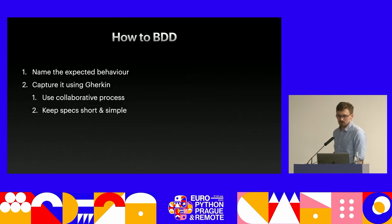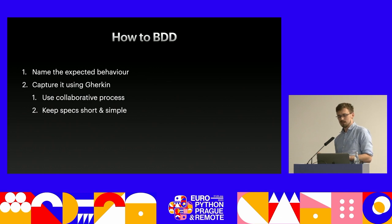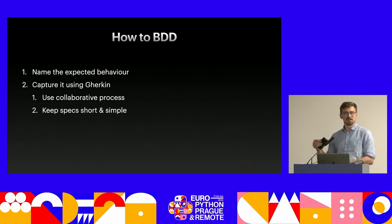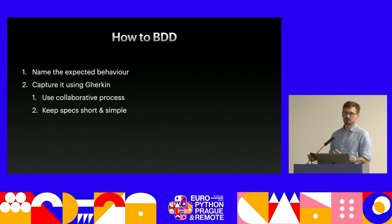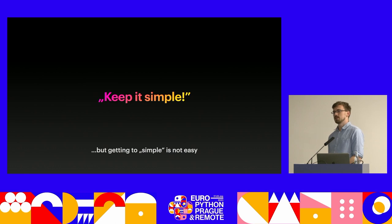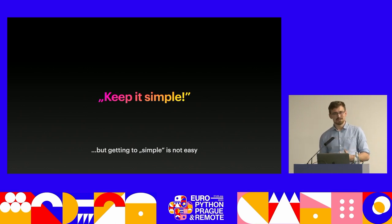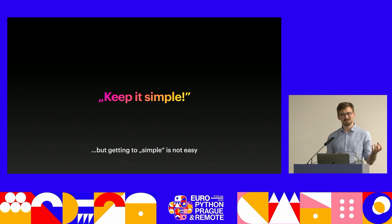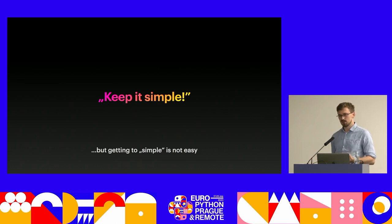This puts the second point on our list: once we know the expected behavior, capture it using Gherkin, ideally collaboratively — at minimum, show it to another person to check if they understand it the same way. It's meant to be read later. We want specs short, simple, and specific. But keeping things simple isn't easy when the underlying system is complex — that complexity is still there somewhere, lurking.